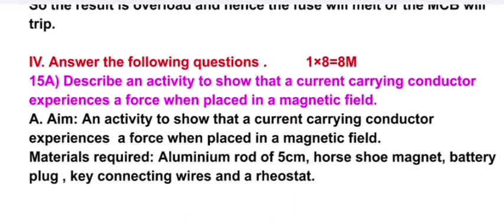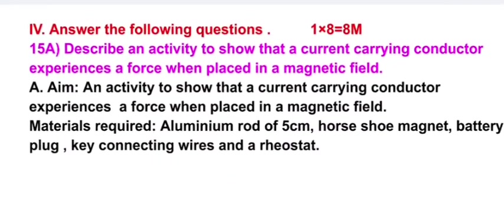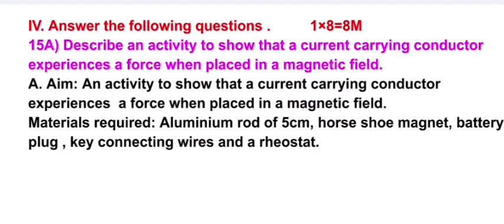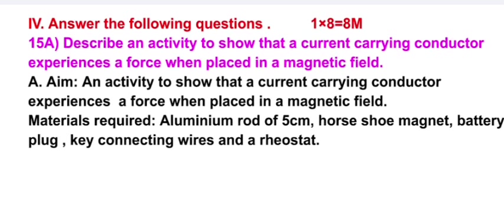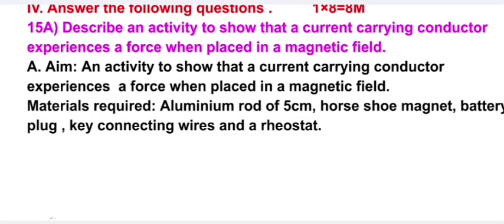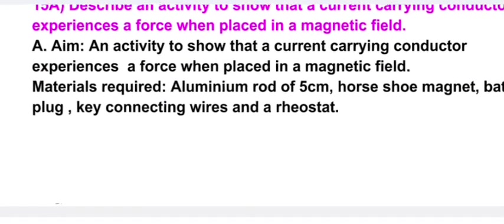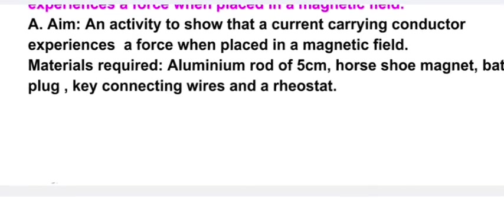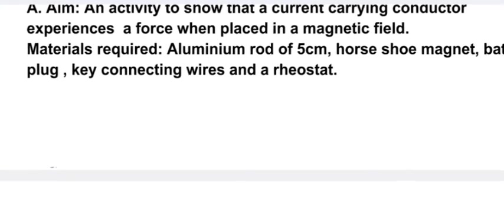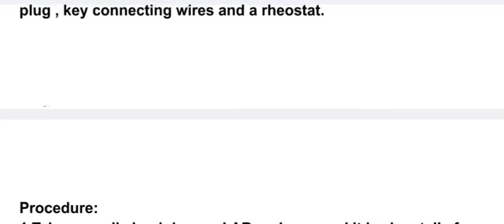Fourth one, answer the following questions: 1 into 8 equals 8 marks. 15a, describe an activity to show that a current carrying conductor experiences a force when placed in a magnetic field. Aim: an activity to show that a current carrying conductor experiences a force when placed in a magnetic field. Material required: aluminum rod of 5 centimeter, horseshoe magnet, battery, plug key, connecting wires, and a rheostat.